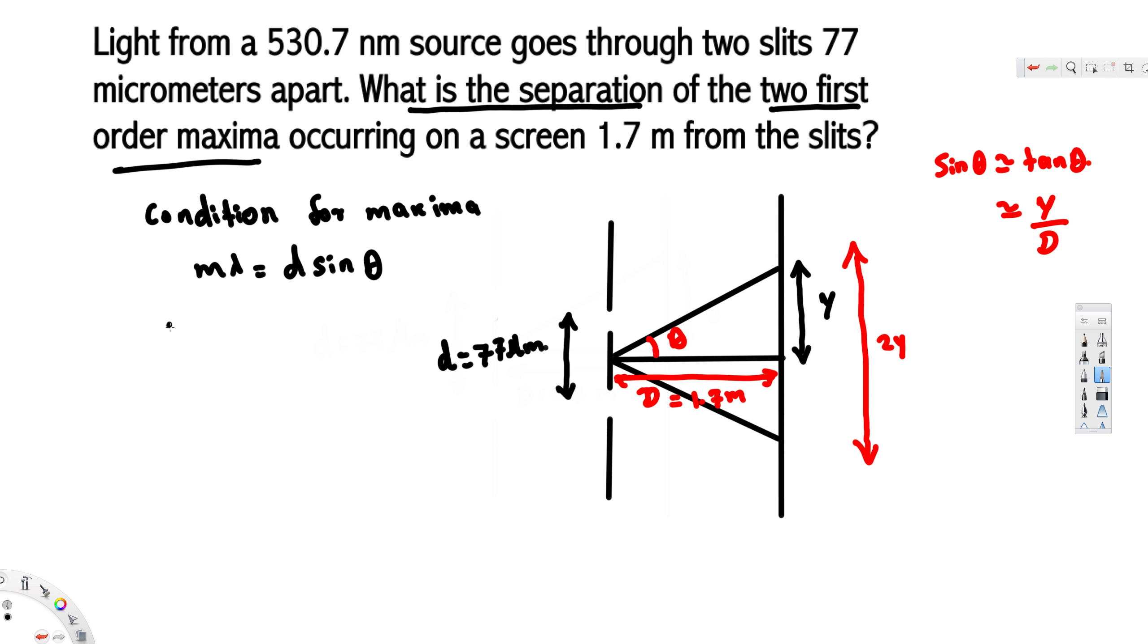Here, instead of this equation, we are going to plug in m lambda equals d y over capital D. Here we are trying to find 2y. First, let's solve for y. Let's rearrange this equation in terms of y. Y is going to be equal to m lambda D divided by small d.